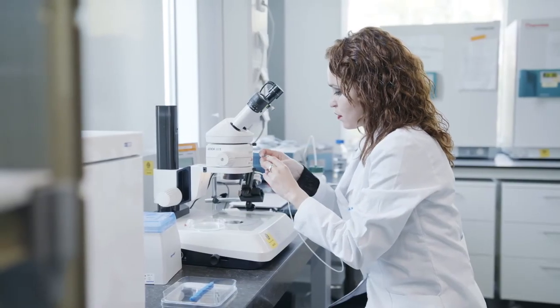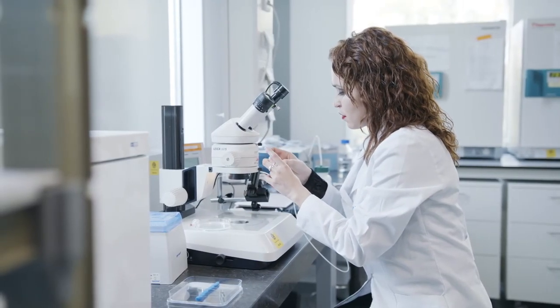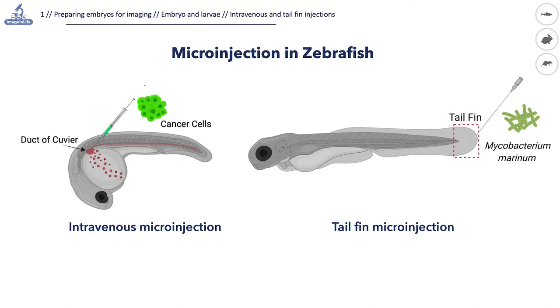Microinjection is an important technique to establish disease models in zebrafish. It can be used, for example, to inject human cancer cells into the zebrafish embryo and study how these cells grow and spread through the tissues. In our research, we use this technique to study host-pathogen interactions during infectious diseases. I am going to show you two microinjection techniques that we use for this type of research.